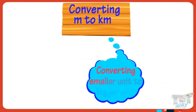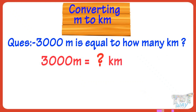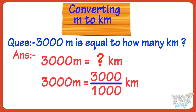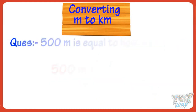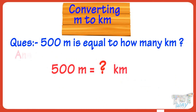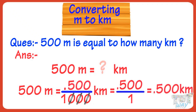Now let's learn converting meters to kilometers — that is, smaller unit to bigger unit. Whenever we convert smaller unit to bigger unit, we divide. 3,000 meters equals how many kilometers? We divide by 1,000. So 3,000 divided by 1,000, cutting three zeros, we get 3. So 3,000 meters equals 3 kilometers. 500 meters equals how many kilometers? 500 divided by 1,000 — putting the decimal after three digits from the right, we get 0.5 kilometers.